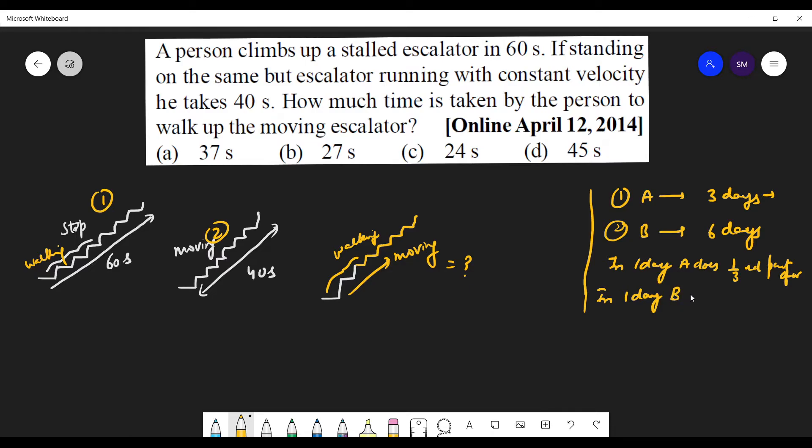So in one day, B does 1 by 6th part of the work. So if they do together, how much part? See now, 1 by 3 means what? See, he does 1 by 3 in first day, then 1 by 3 in second day, 1 by 3 in third. He does it in 6 days. So he does 1 by 6th in one day, agreed.